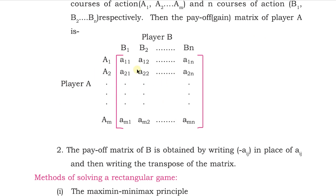Whatever gains or points are written in the matrix are the gains of player A. If there is a negative number, it means A has lost that many points to player B; if it is a positive number, A has gained from player B. If you invert the same matrix for B, whatever was positive for A will be negative for B, and vice versa. According to step one, for all rows we first take their minimums, then out of those minimums we choose the maximum — this is called the maximin.